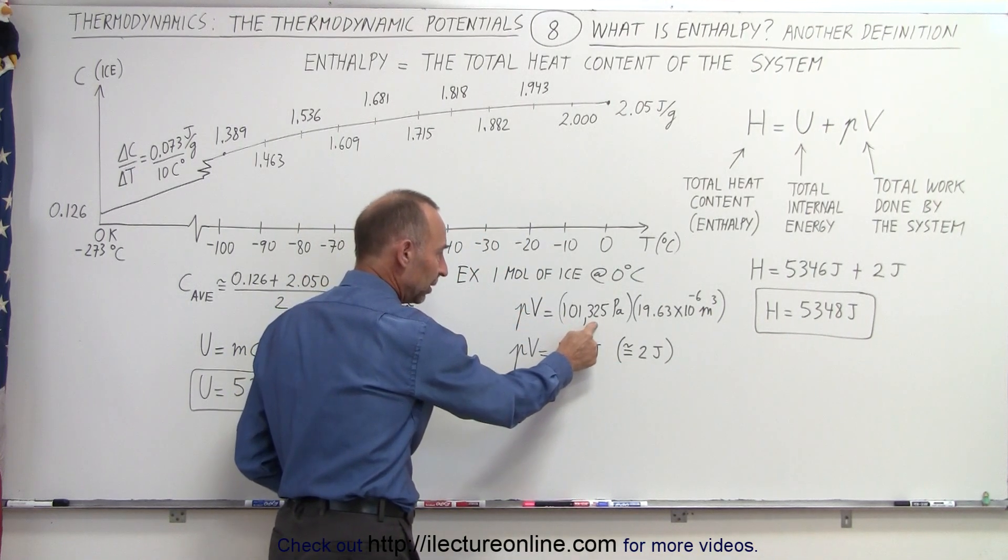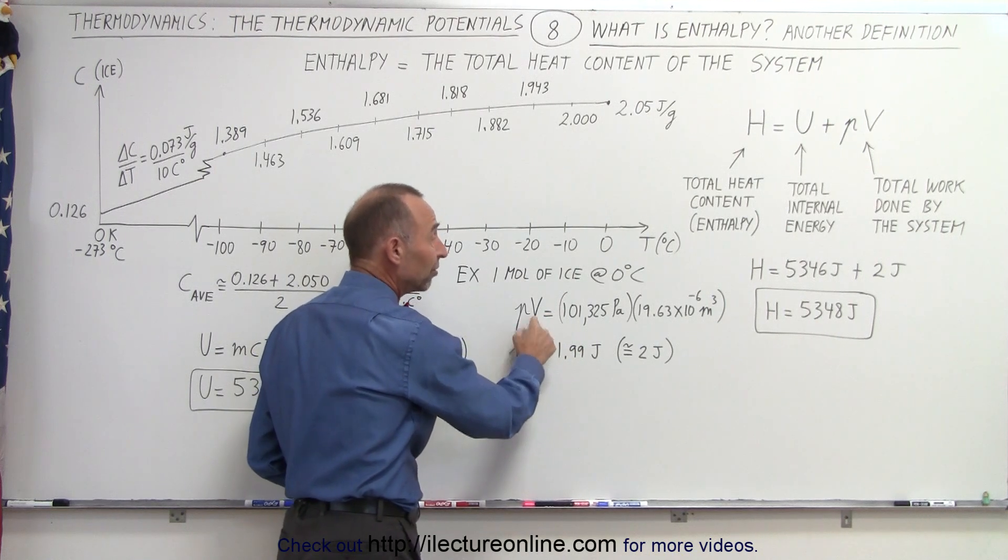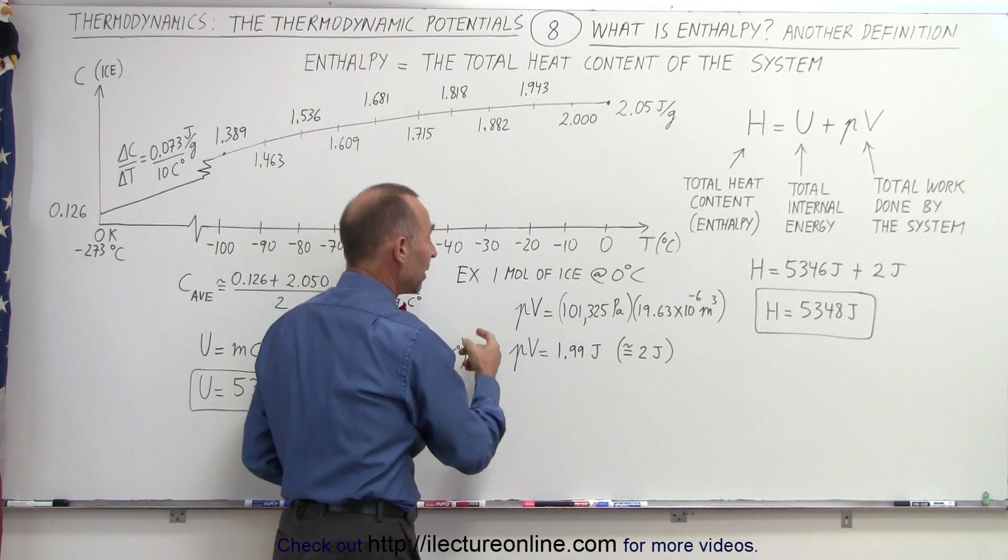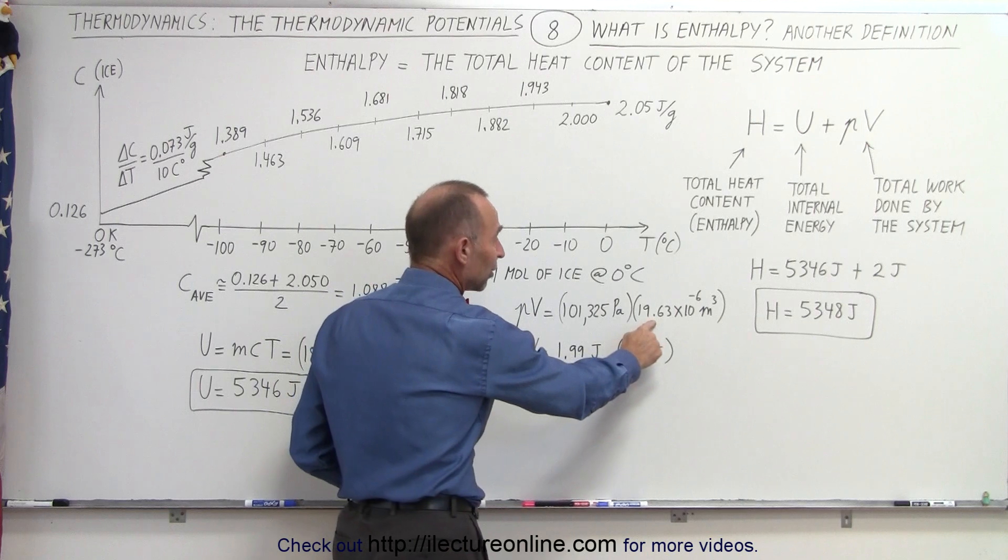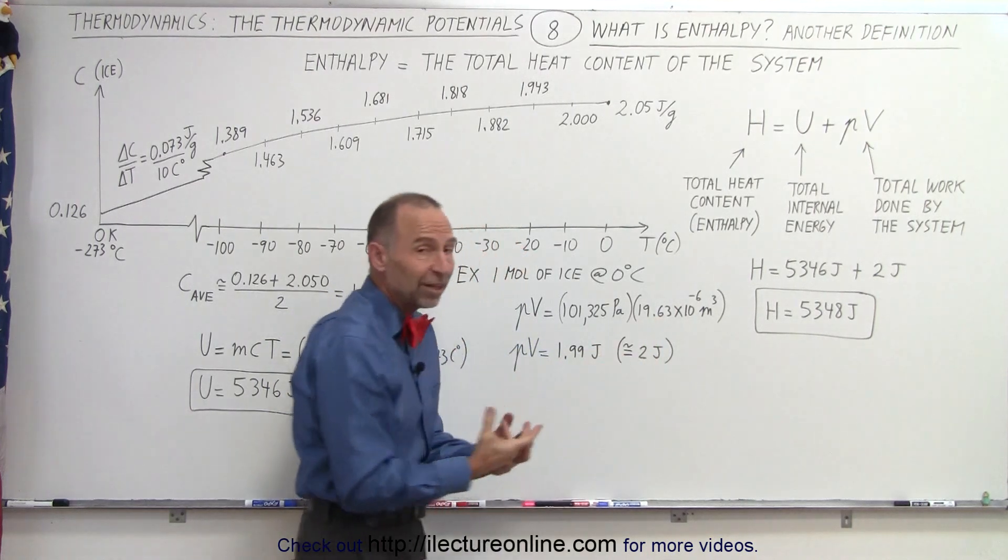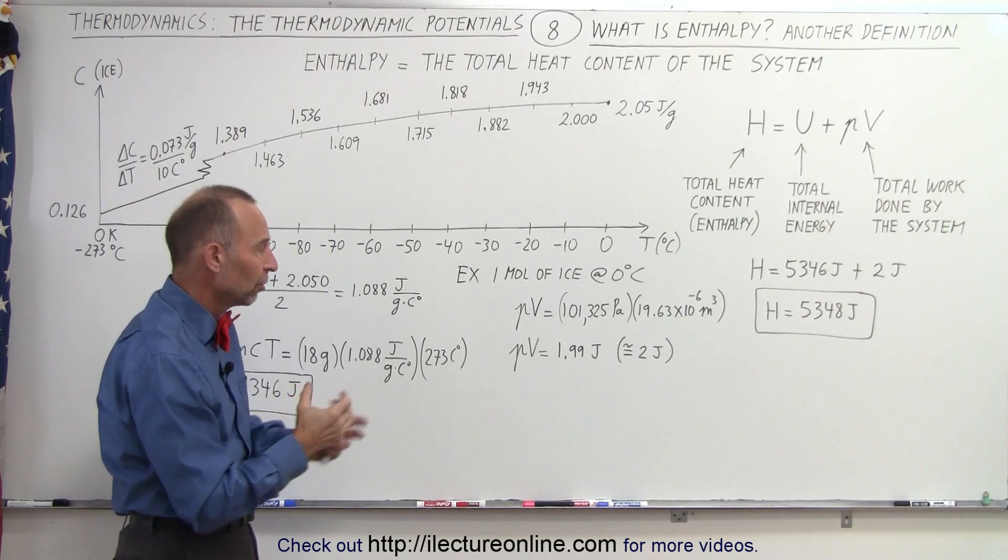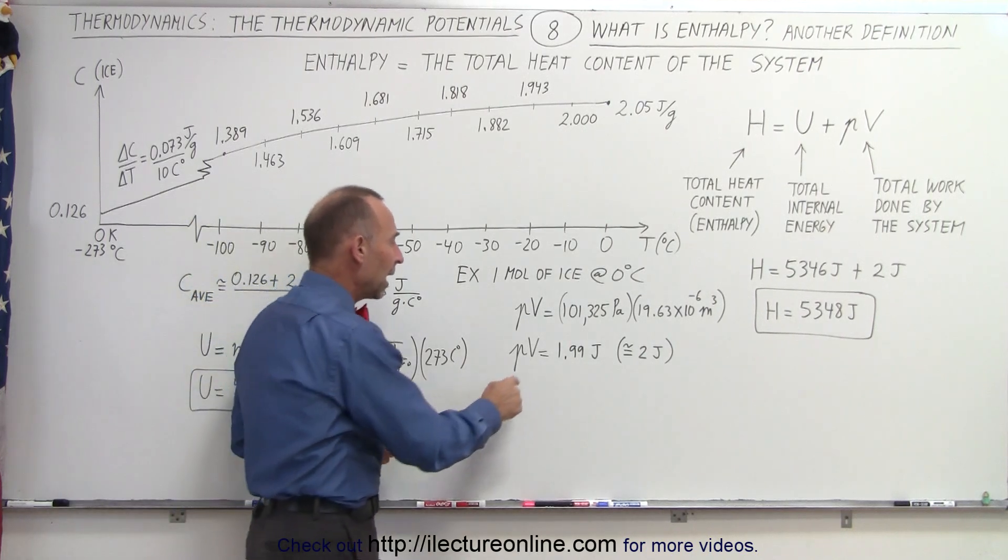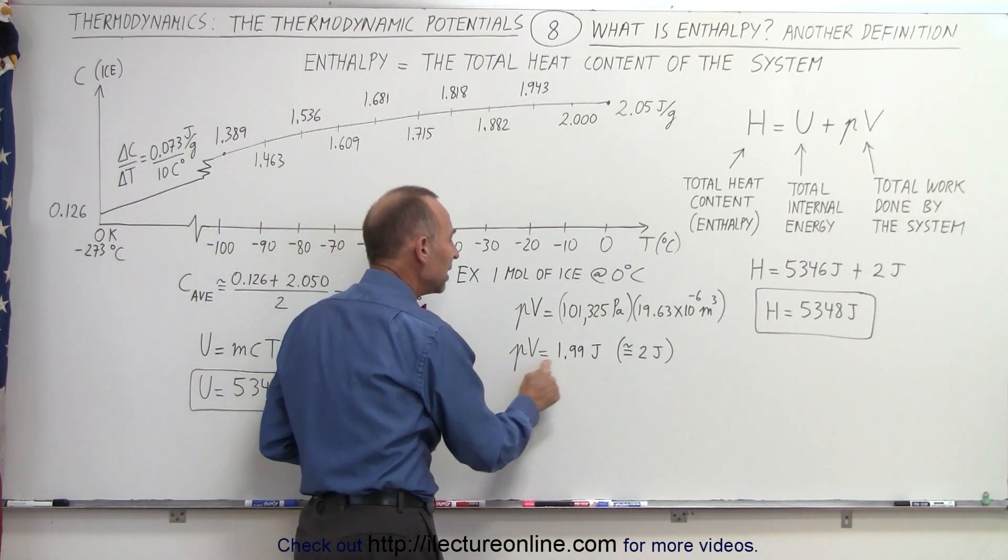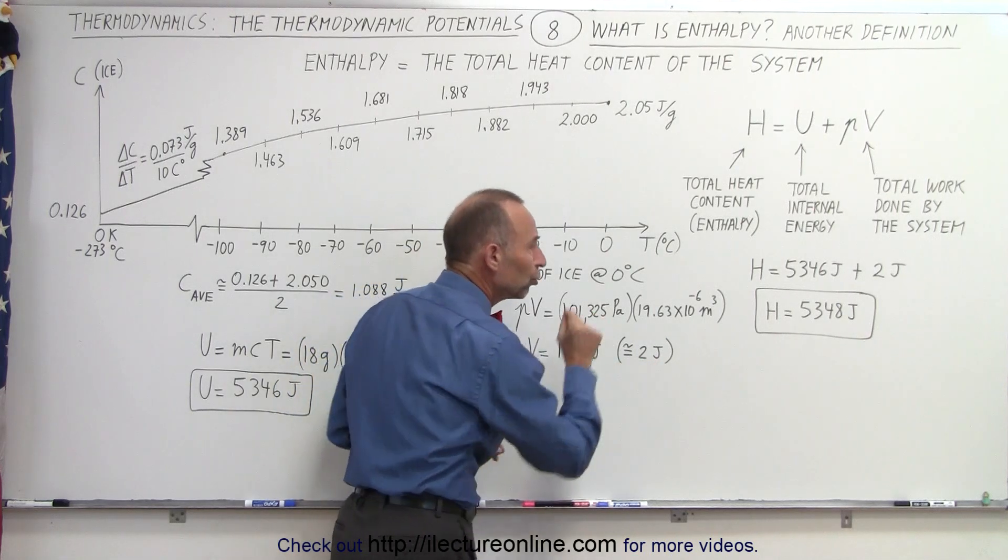The pressure would be one atmosphere and the volume of one cube of ice that has a content of 18 grams, one mole of ice, has a volume of 19.63 cubic centimeters, which is 19.63 times 10 to the minus 6 cubic meters. We multiply that together and we see that p times v is equal to two joules of energy.